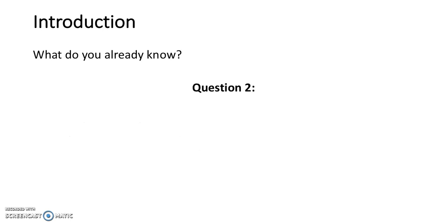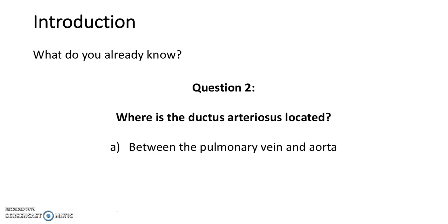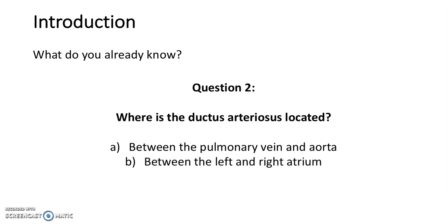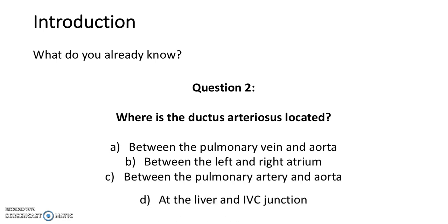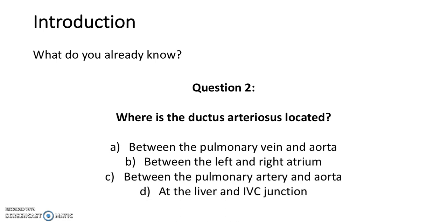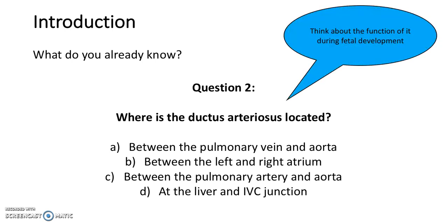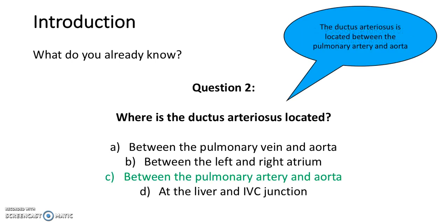Question 2: Where is the ductus arteriosus located? A. Between the pulmonary vein and aorta. B. Between the left and right atrium. C. Between the pulmonary artery and aorta. Or D. At the liver and IVC junction. Think about the function of it during fetal development. The answer is C, between the pulmonary artery and the aorta.